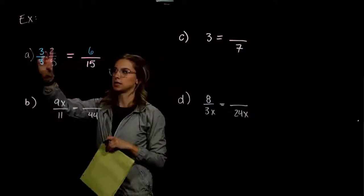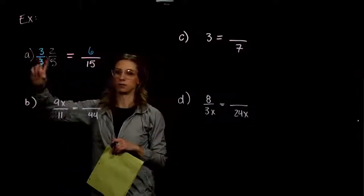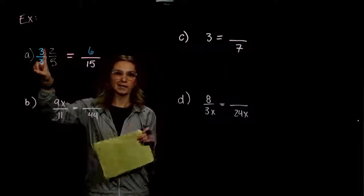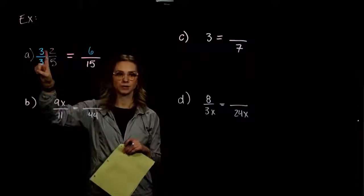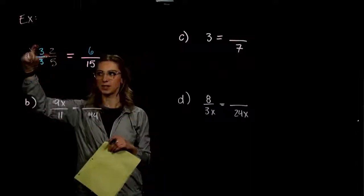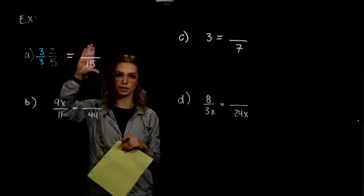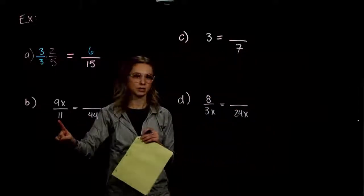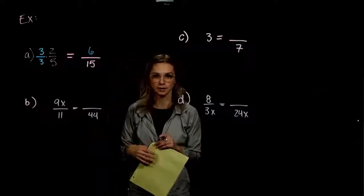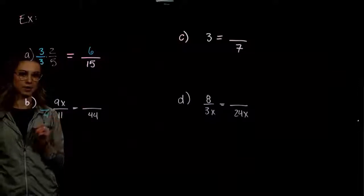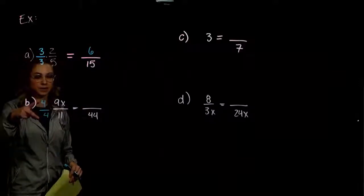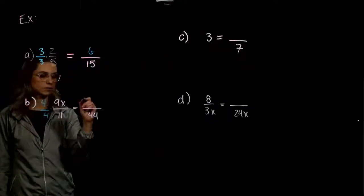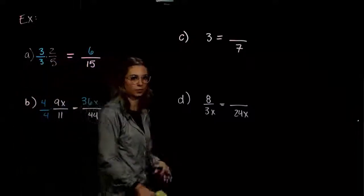It's important to write this notation correctly — 3 divided by 3 is just 1, and multiplying by 1 doesn't change the value. Writing 1 as the same number over itself just changes what the fraction looks like, but keeps the same meaning. In part B, we want to turn 11 into 44, so we multiply by 4. Whatever we do to the bottom we do to the top: 9x times 4 gives us 36x over 44. That's our equivalent fraction.